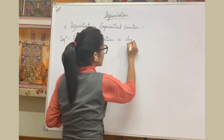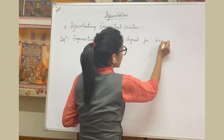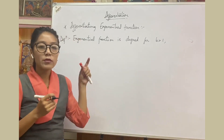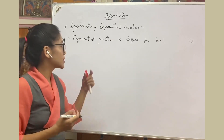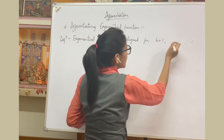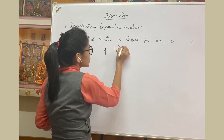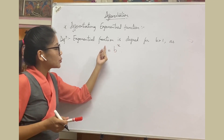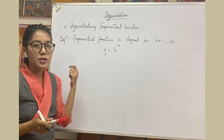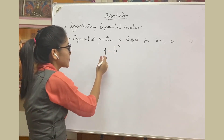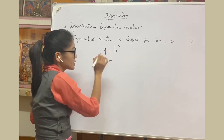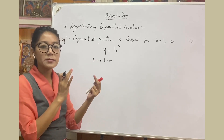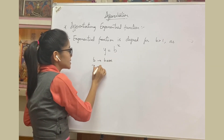The exponential function is defined for b greater than 1 — we take only a positive base strictly greater than 1, because 1 raised to any power is 1. So the exponential function is y = b raised to x, where b is the base and x is the exponent, also called the power.